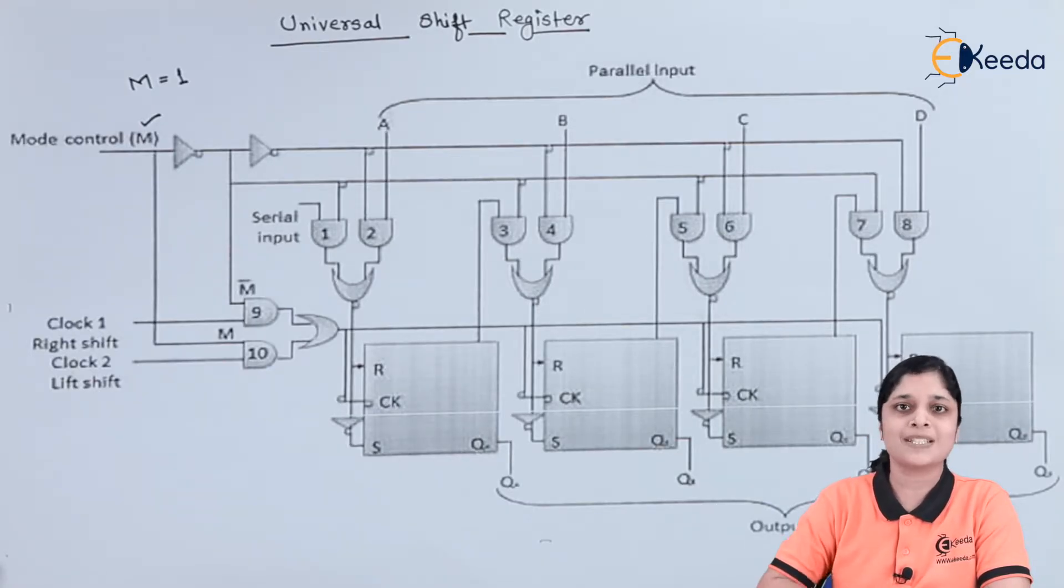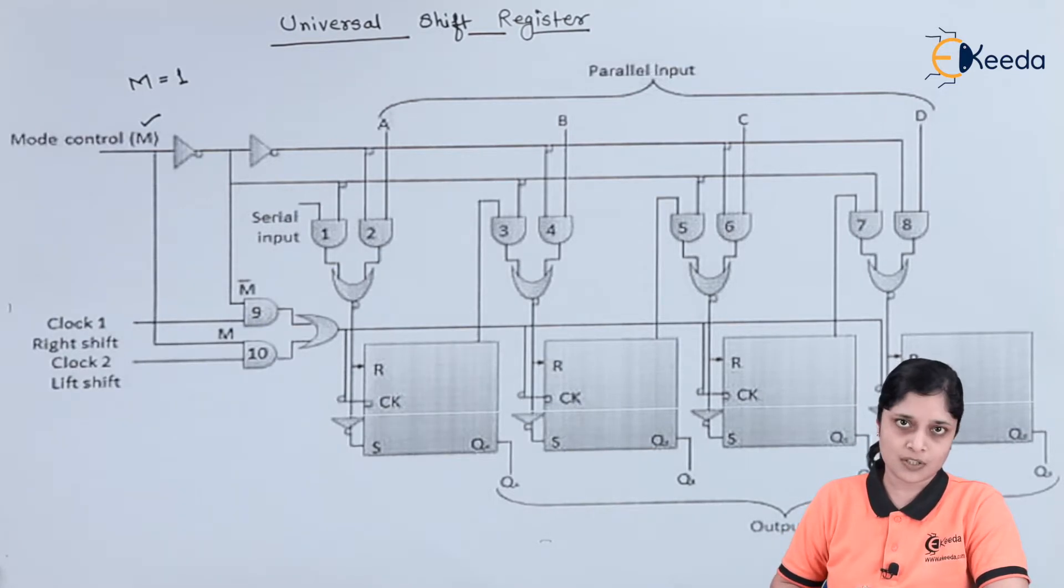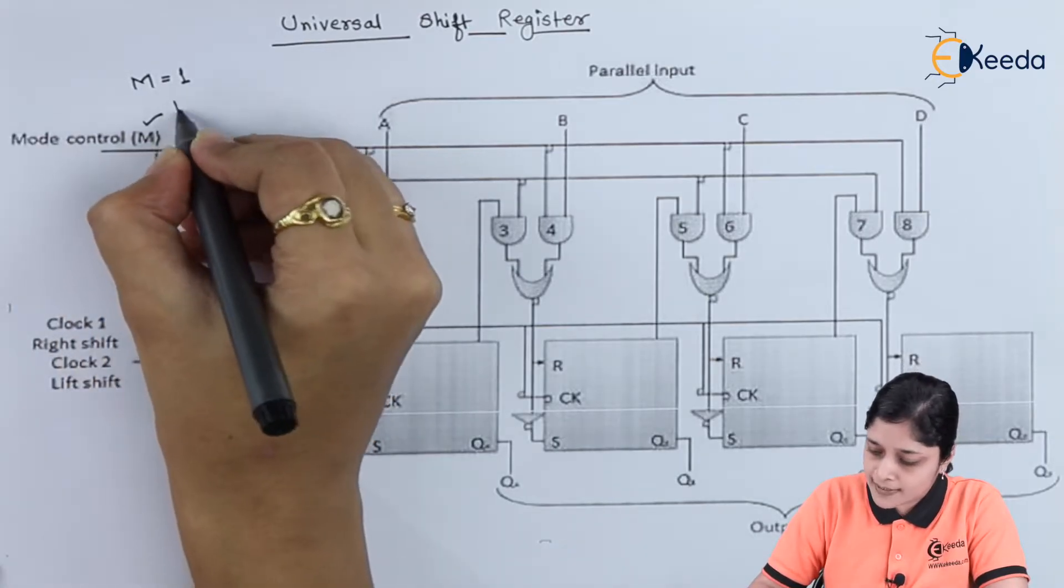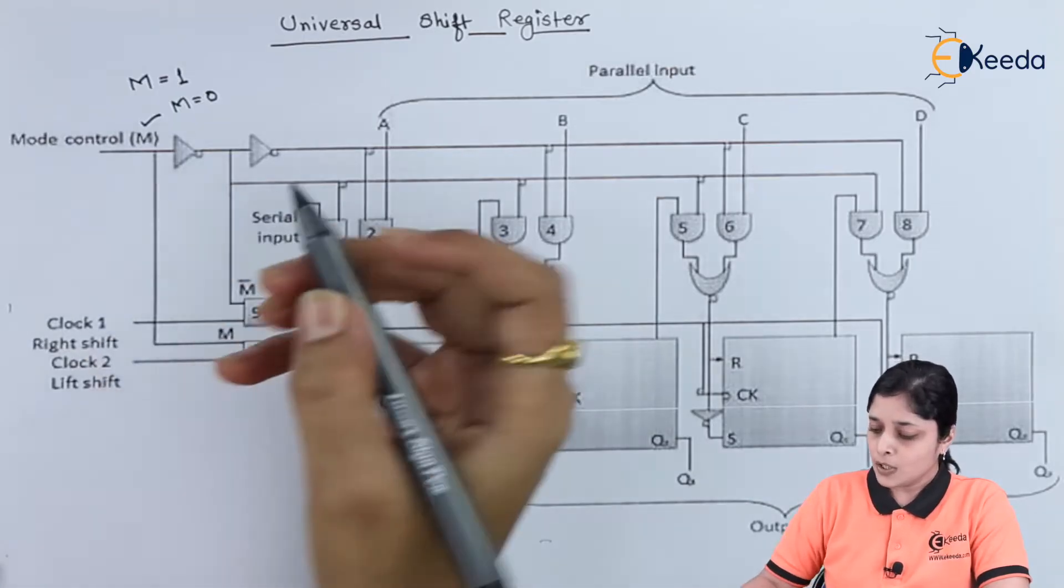That is PIPO mode, means parallel input and parallel output you are getting with this block diagram of a universal shift register. Now whenever this M equals to zero, then you are serially getting output data is activated.